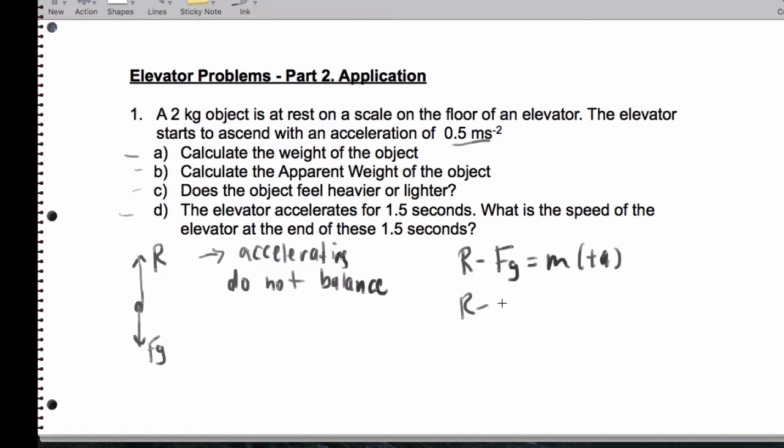We have the normal upward force competing with the weight. And the effect is that the elevator accelerates upwards. So we're going to end up getting R minus 2 times 10. Fg is m times g. Please don't forget that. And that's going to equal 2 times the acceleration, which is 0.5. So, let's get the real weight first. For part A, Fg is 2 times 10, which is 20 newtons.